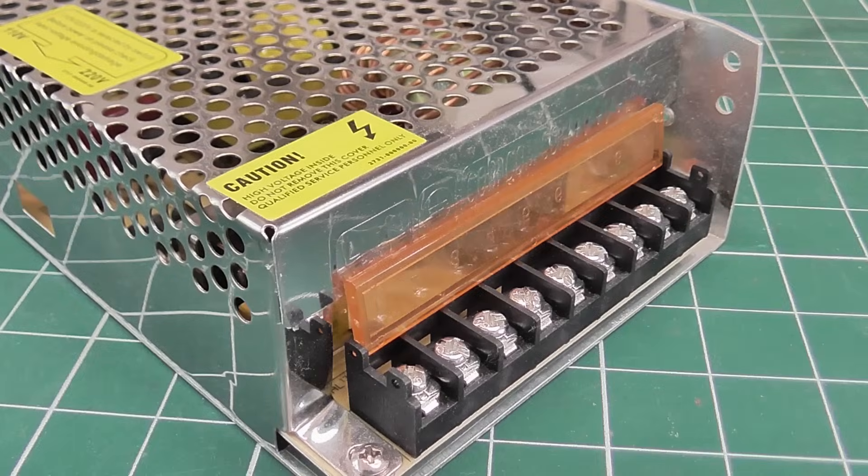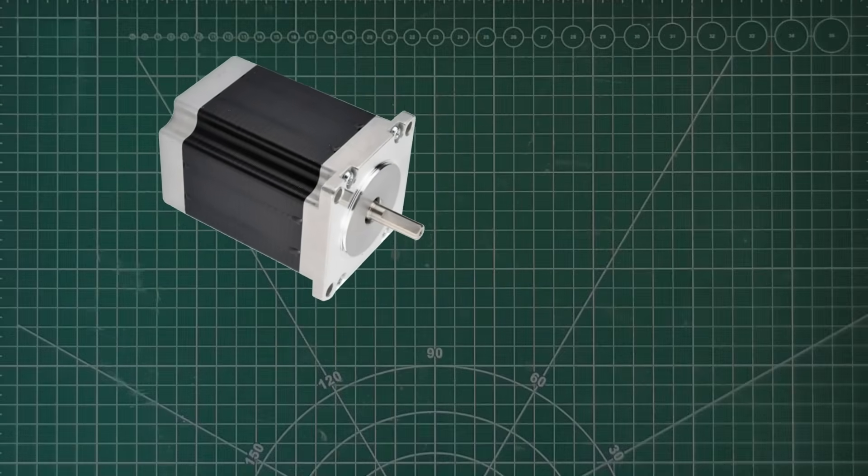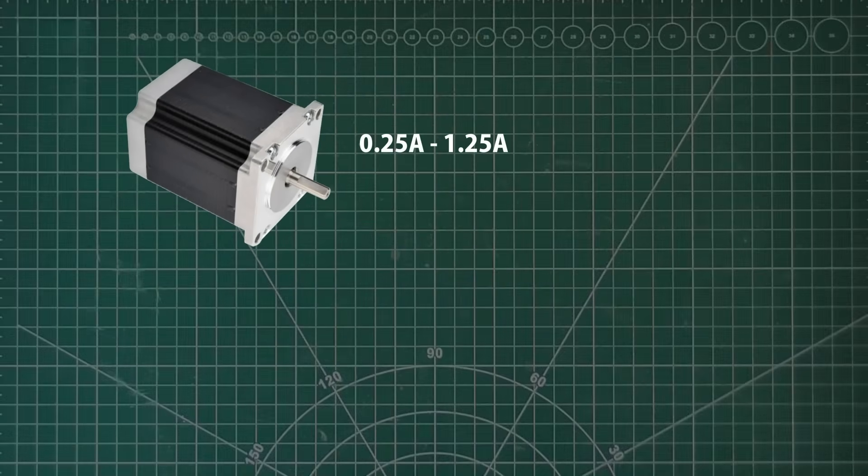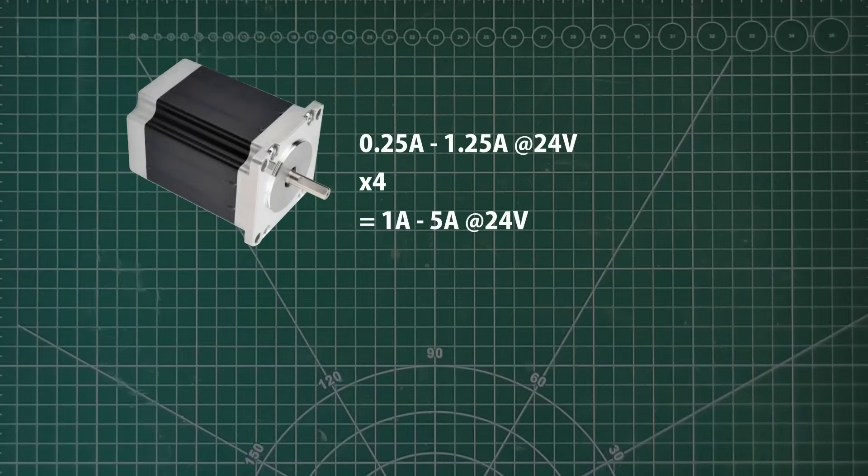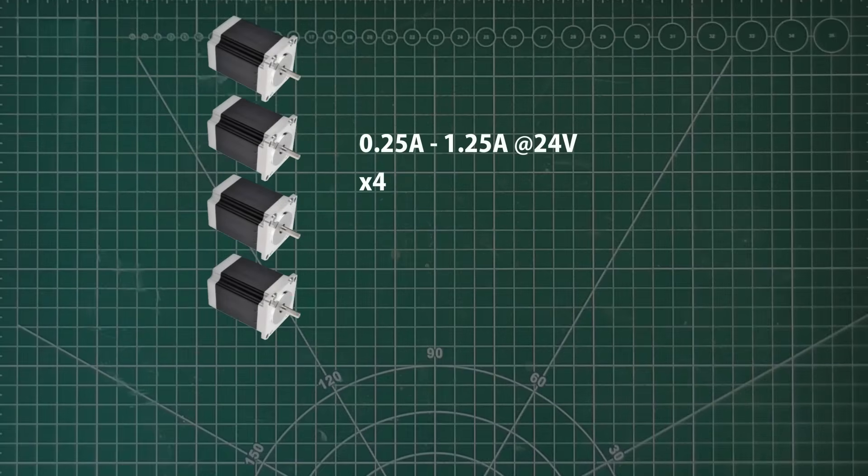So to sum up, how much power do you really need? This 2.8 amp motor draws from a quarter of an amp to 1.25 amps from a 24 volt supply. So if I wanted to run 4 of these, I could actually use just a 5 amp supply. Not the 30 amp one from my earlier estimate. And remember, it's very unlikely if you have 4 motors that they would all be running to the maximum at the same time. So you could probably get by with less.